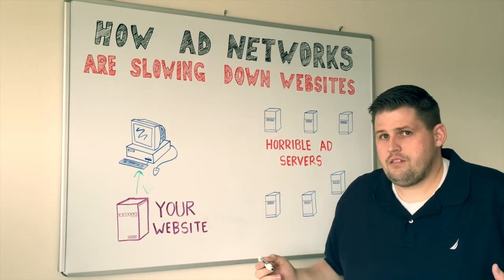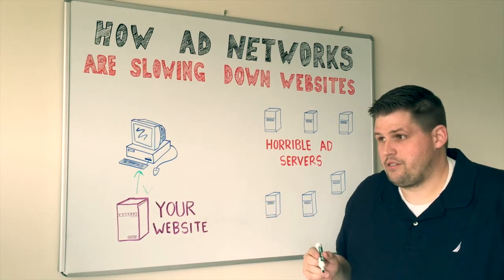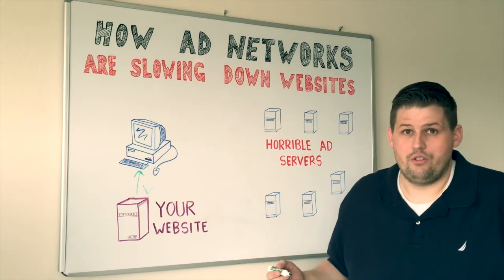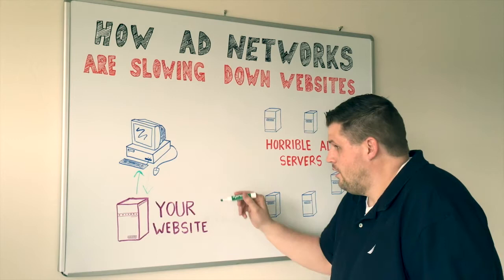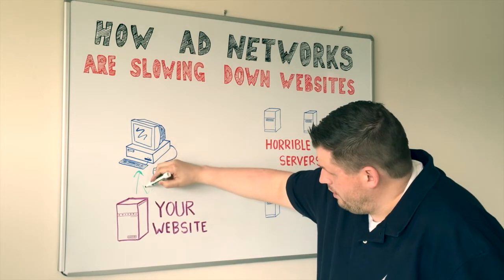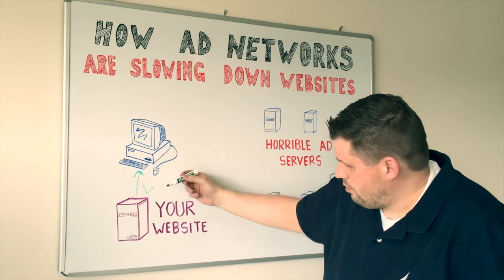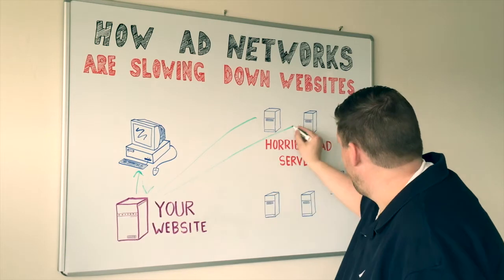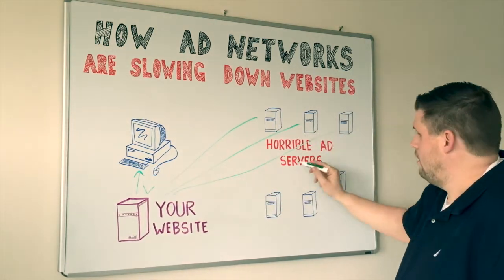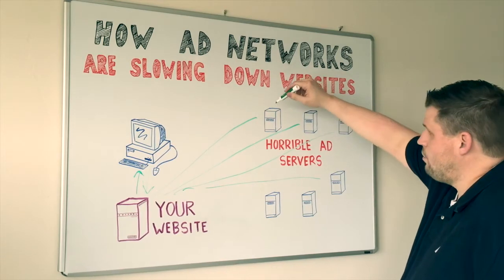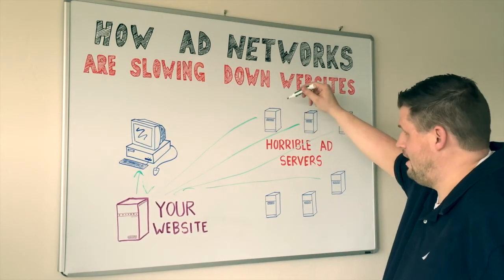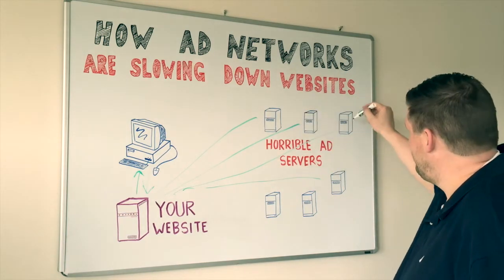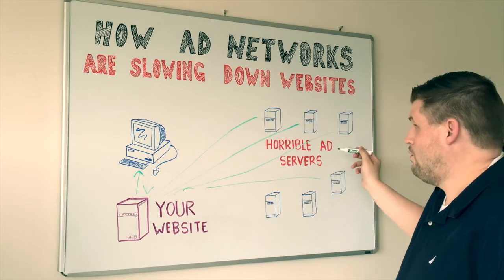When you start adding ads to the equation, that's when things get a little more complex. If ads aren't being audited and validated and put through some quality control checks, some really ugly things happen. When your reader wants to learn about your latest chocolate chip cookie recipe, they make that initial request and then your server has to start reaching out to these other servers — and these are what we call horrible ad servers. This is where all the flash and animated images and all that garbage lives.